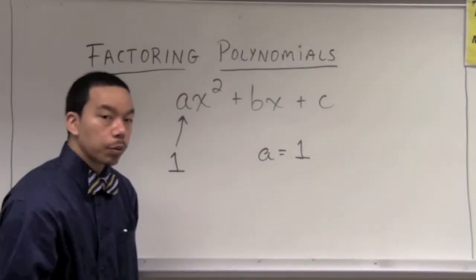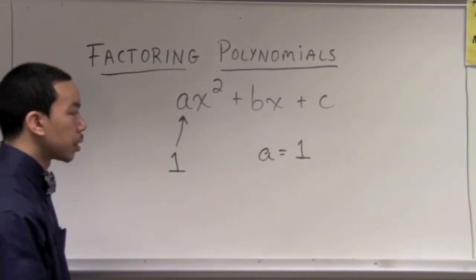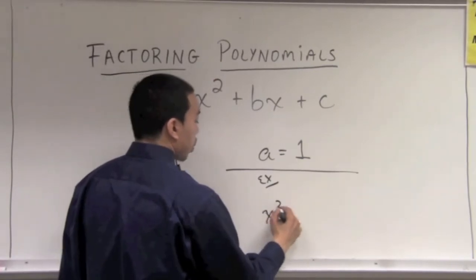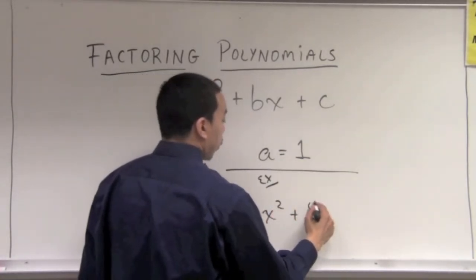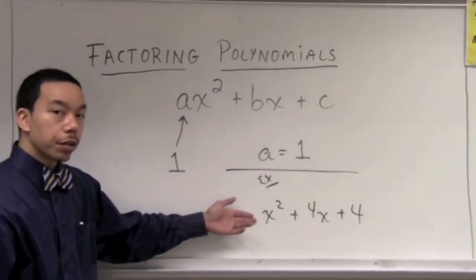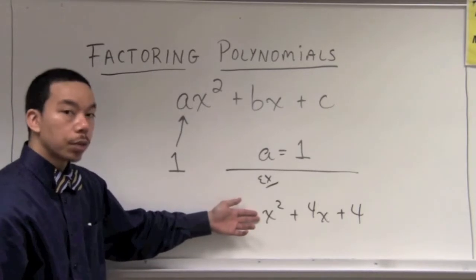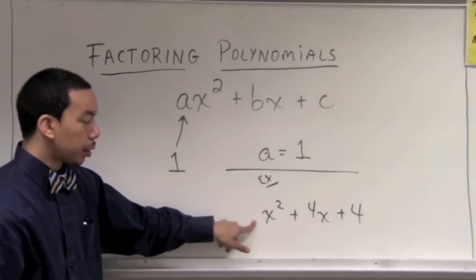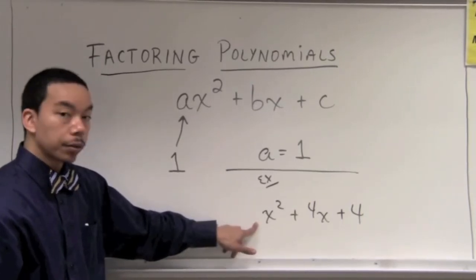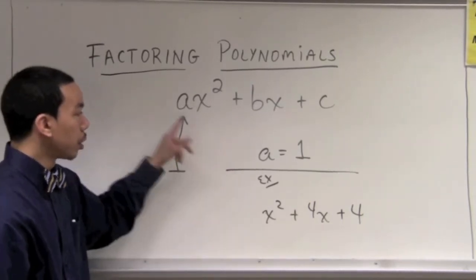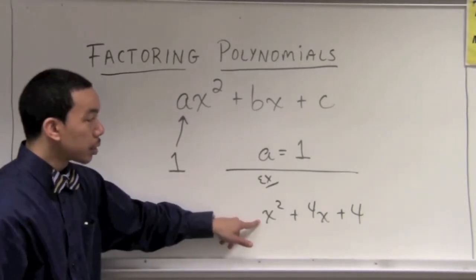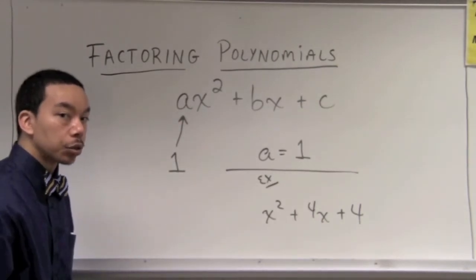Most of the time when we have a polynomial, we'll see examples that look like x squared plus 4x plus 4. When we don't see anything in front of the x squared term, it's implied to be a 1 — an invisible 1 standing right there. Therefore, the leading coefficient of the x squared term is a 1, and whenever we see this, we'll attempt the method we're about to use.